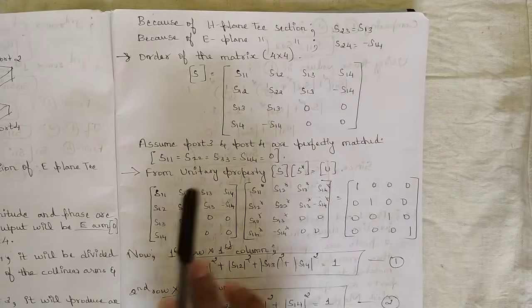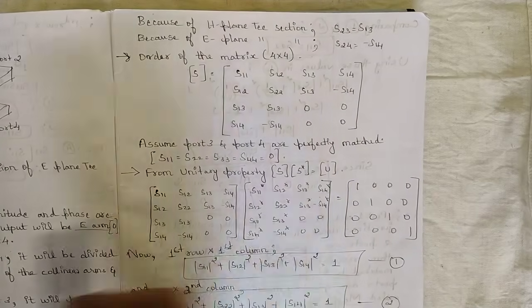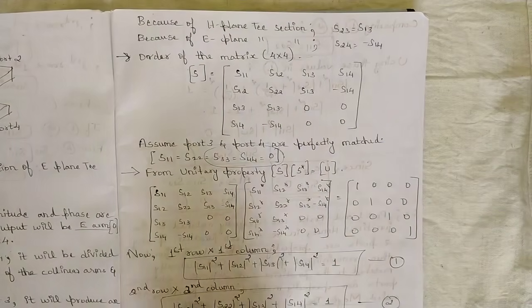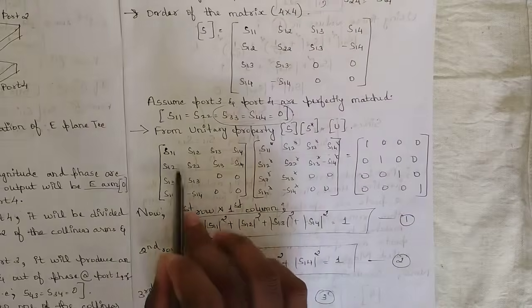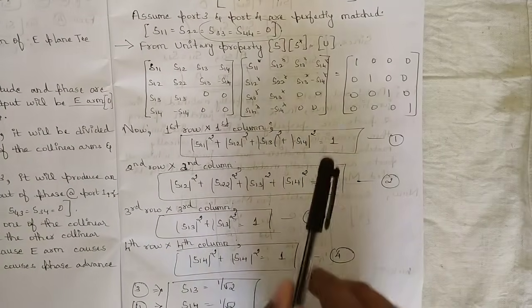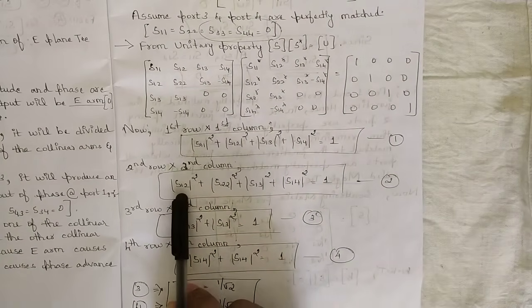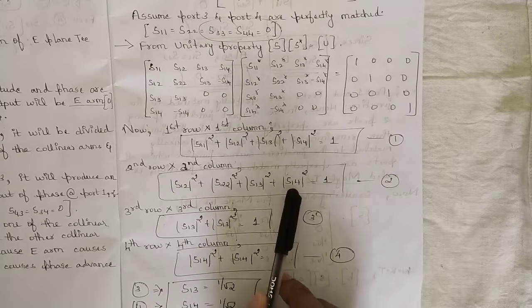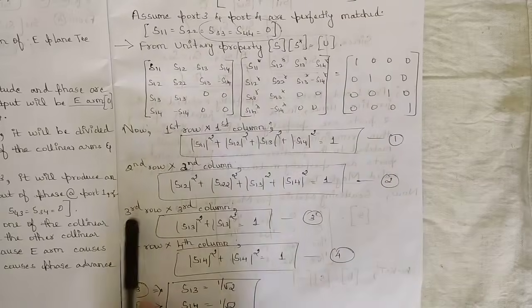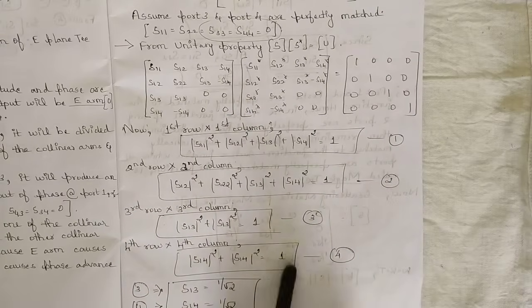Assuming ports 3 and 4 are perfectly matched, s33 and s44 equal 0. Applying the unitary property — S times S-conjugate equals the identity matrix — and multiplying row by column: equation 1 gives s11² + s12² + s13² + s14² = 1; equation 2 gives s12² + s22² + s13² + s14² = 1; equation 3 gives 2·s13² = 1; equation 4 gives 2·s14² = 1.